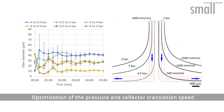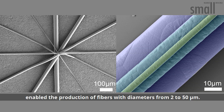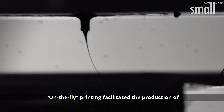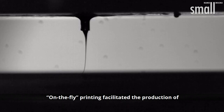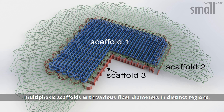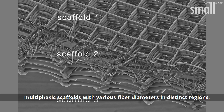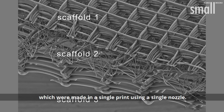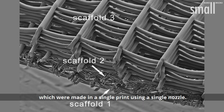Optimization of the pressure and collector translation speed enabled the production of fibers with diameters from 2 to 50 micrometers. On-the-fly printing facilitated the production of multiphasic scaffolds with various fiber diameters in distinct regions, which were made in a single print using a single nozzle.